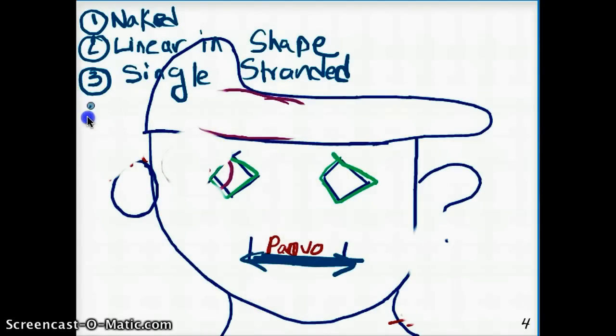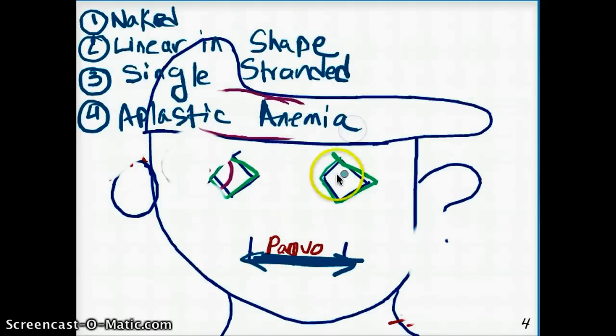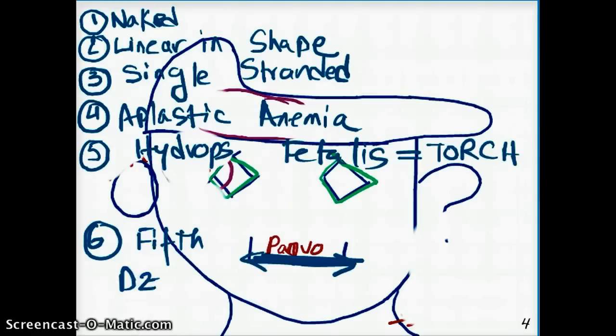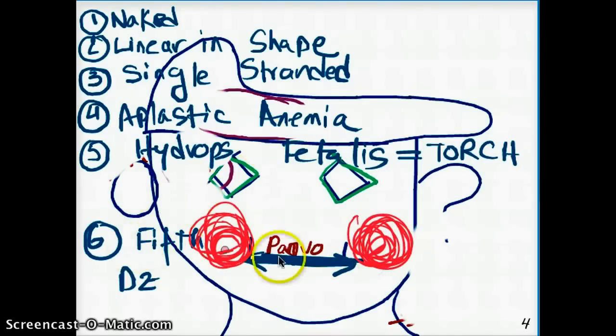Now, parvovirus is famous for causing aplastic anemia. They're going to cause, you know, they love to go to the bone marrow and they're going to cause aplastic anemia. In newborns, they can cause hydrops fetalis. In fact, they fall under the TORCH group. TORCH group of viruses. And they also cause a disease called fifth disease.